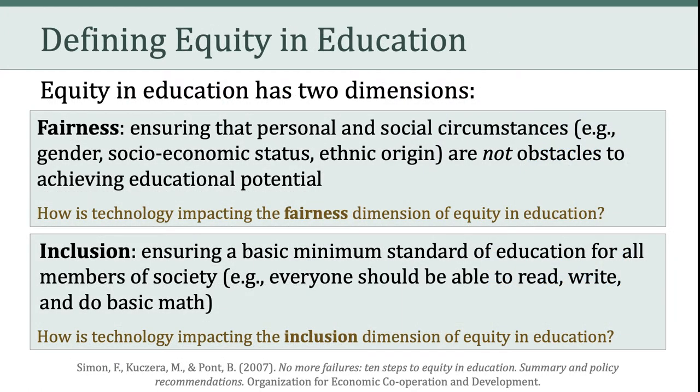If we connect that back to the fairness dimension of equity, recall that fairness means ensuring that personal and social circumstances are not obstacles to achieving educational potential. And when it comes to the inclusion dimension, that means ensuring that everyone has a basic minimum standard of education. And as Darling Hammond suggests in her analysis of the 2003 PISA results, we are not living up to those ideals.